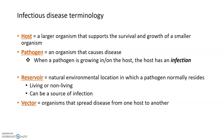Two other important terms are reservoirs and sources. Reservoirs are the natural environmental locations where pathogens are normally found and live — they can be living or nonliving, animate or inanimate. Reservoirs can be animals, humans, water, or air. Reservoirs can be the source of an infection, but they don't have to be. The reservoir is where you naturally find a pathogen, while the source of infection is wherever the host actually acquires the pathogen — either directly from a reservoir or from a secondary source.